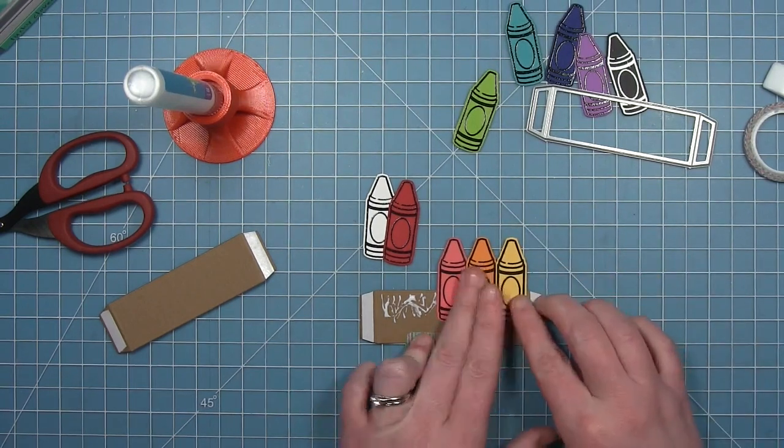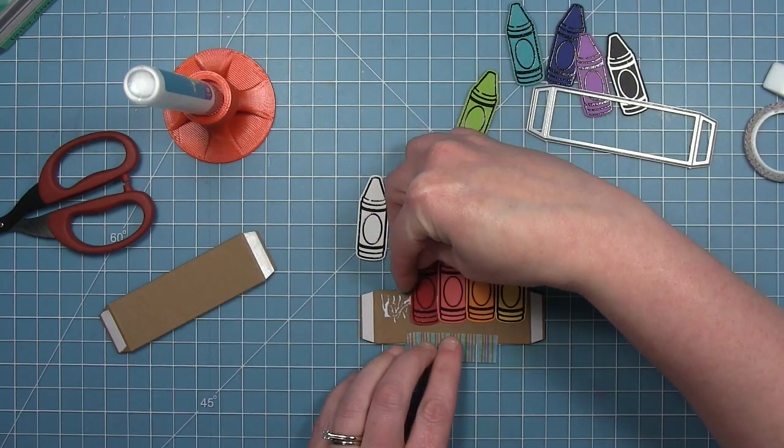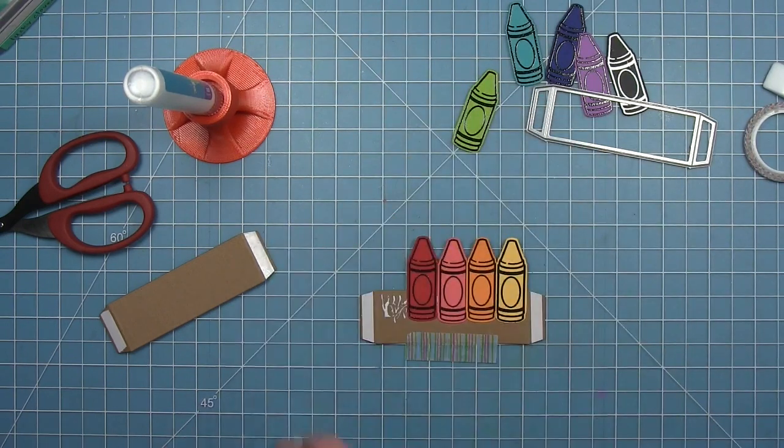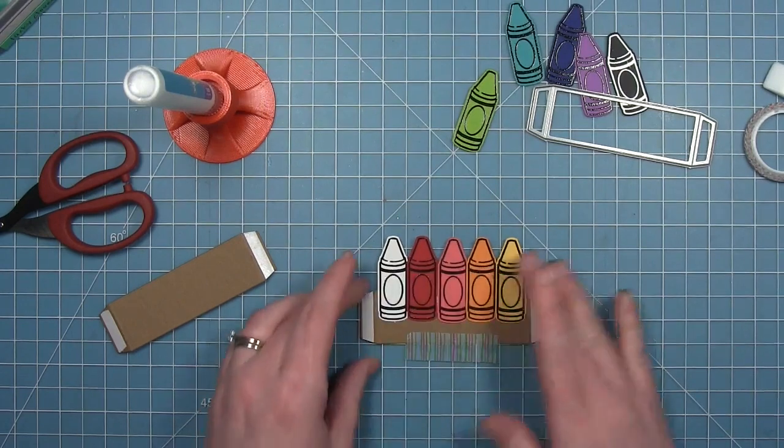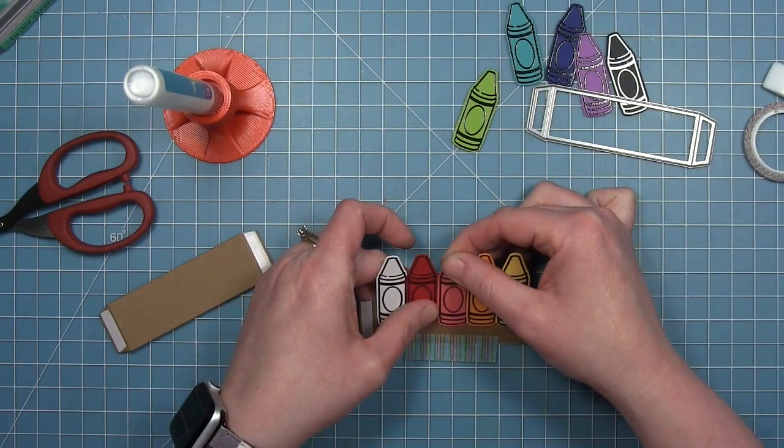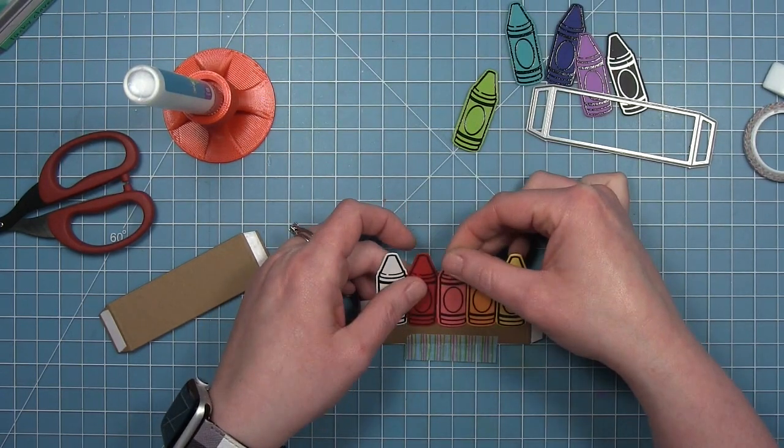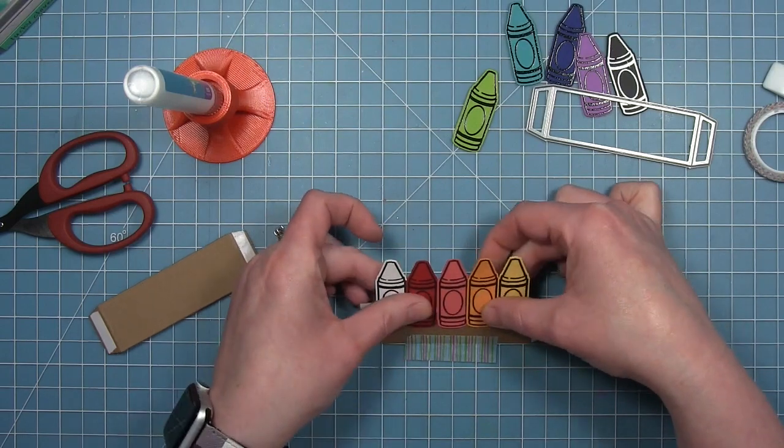And since I used some liquid glue I can kind of shift them around a little bit if I need to. They don't fit perfectly right next to each other, you just kind of have to tuck them slightly. But you can still see the whole image even with the edge tucked and I think it looks so cute.